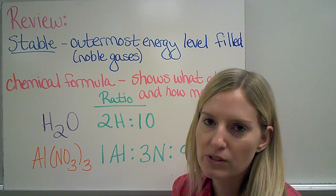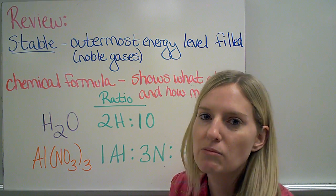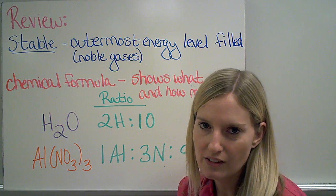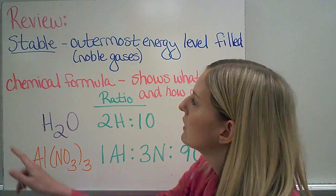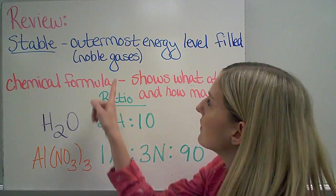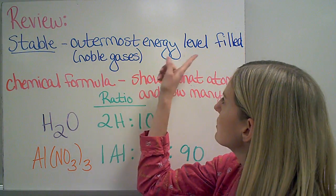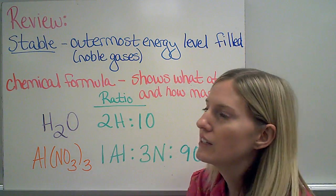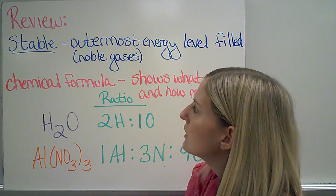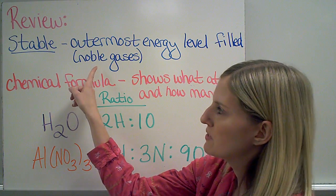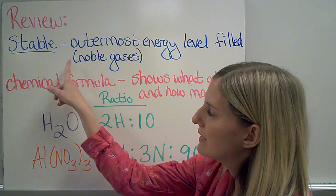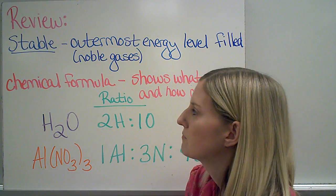Let's take a moment to review. Here are some terms we're going to continue using in this chapter. The first one is stable, which means that the outermost energy level is full for that particular atom. Remember that the elements that are already stable are noble gases.